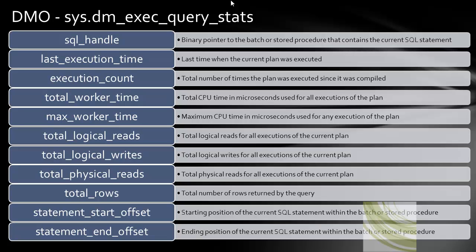After that, we see there is a total rows column. This column returns the number of rows for every query, and it is a very important column because it tells you how network bandwidth is used by these queries. You can just run this query and find out the total rows to see which queries are doing the most. Remember, this total rows column was introduced with SQL Server 2008 R2 SP1, so it will not be available prior to that.